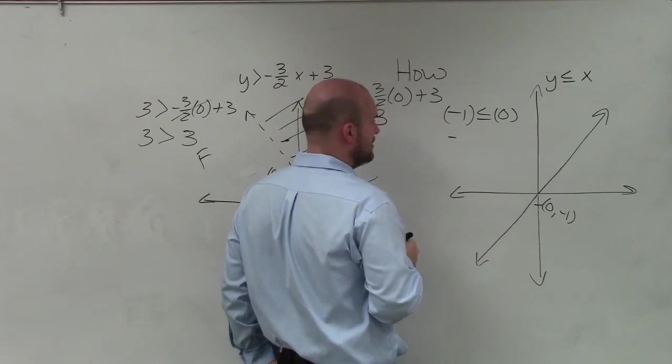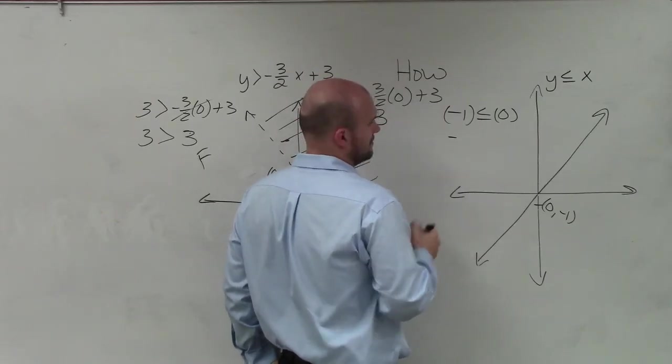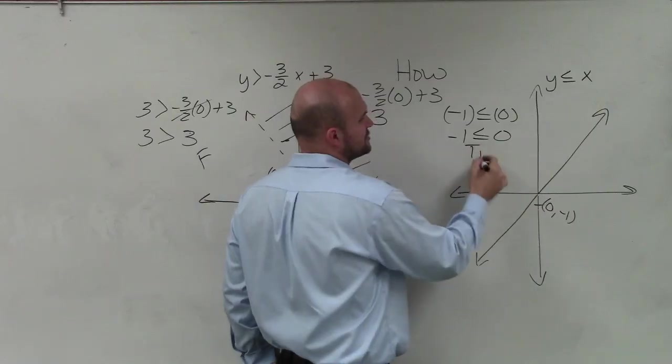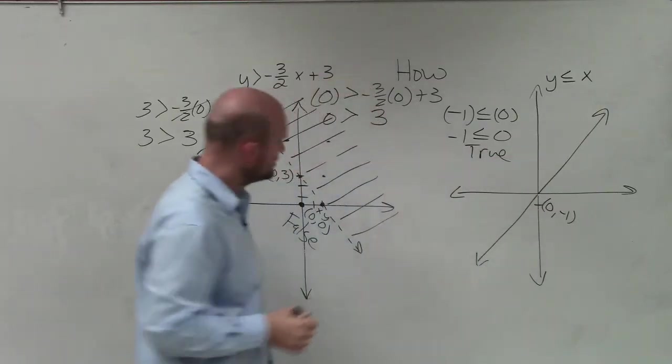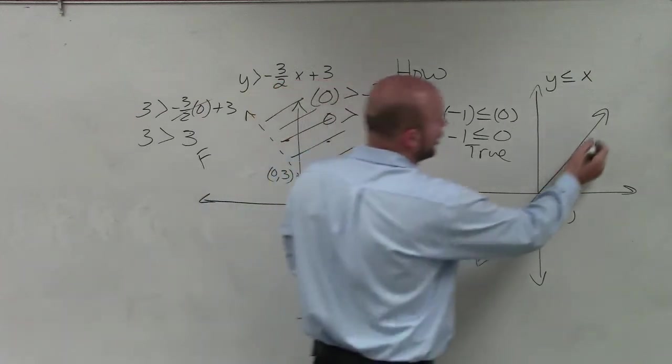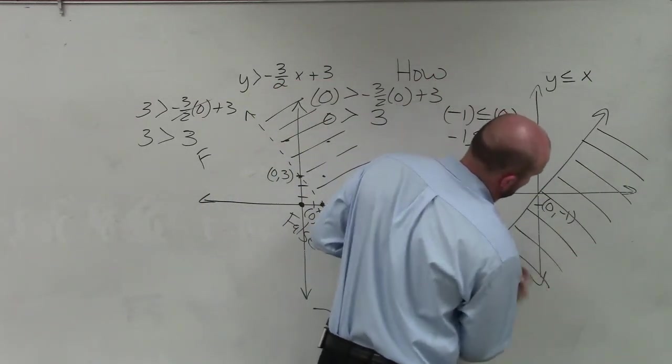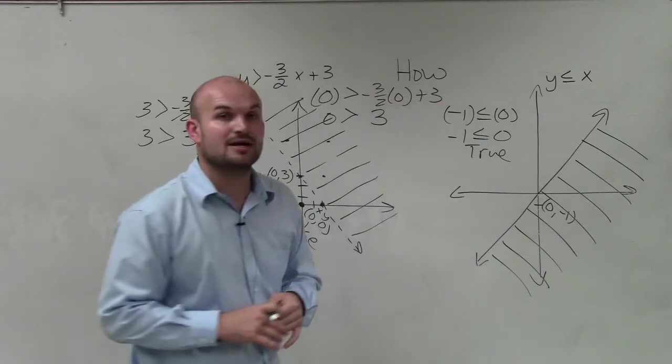Oh, I wanted to choose the one above. Dang it. Negative 1 is less than or equal - that is true. So since that is true, that means all the points below it are also going to be true.